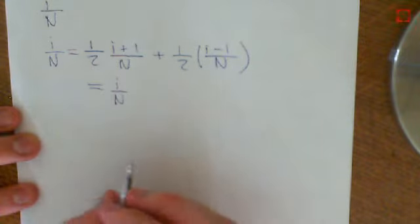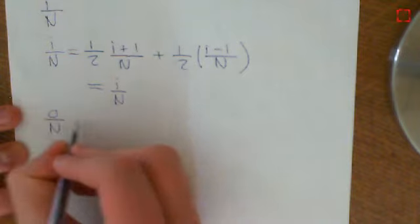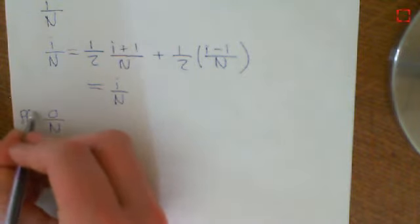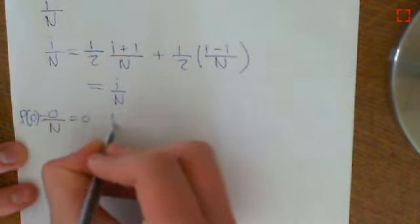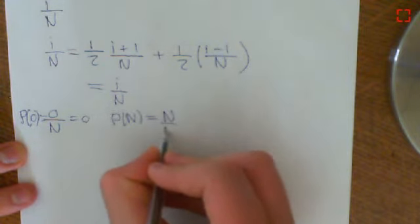Then we check that it satisfies our boundary condition. So when i is equal to 0, you get 0 over n. So it satisfies the fact that p of 0 is going to equal 0. And it also satisfies the fact that p of n is equal to n over n, which is equal to 1.